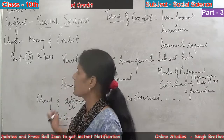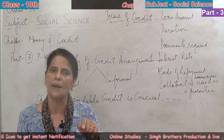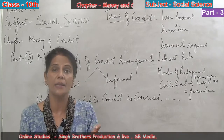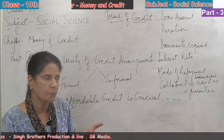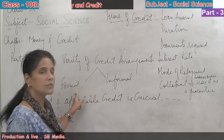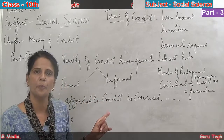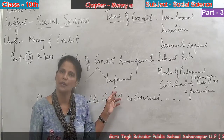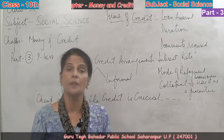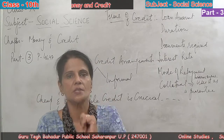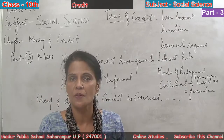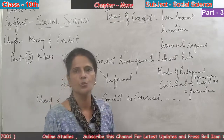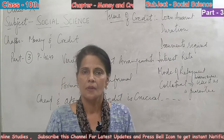You can see in the NCERT pages 46 to 49 the pie chart, which gives you an idea that rich people are availing cheaper loans. Not very cheap, but cheaper than the informal sector — they are availing loans from the formal sector at an affordable interest rate. And poor people are still dependent on the informal sector, where sometimes the interest amount becomes higher than the principal amount itself.